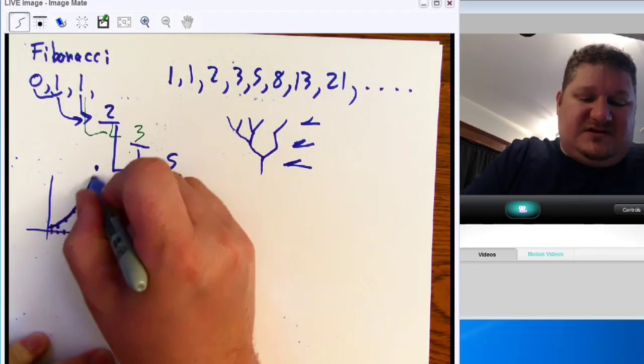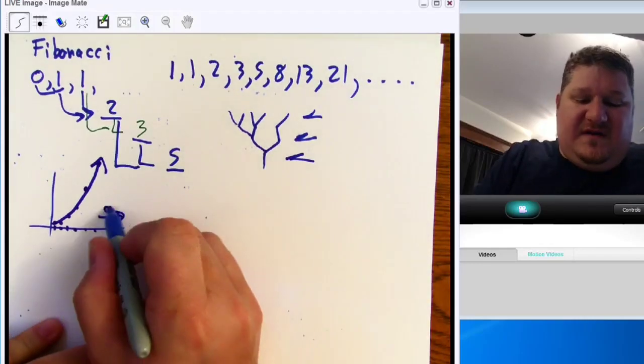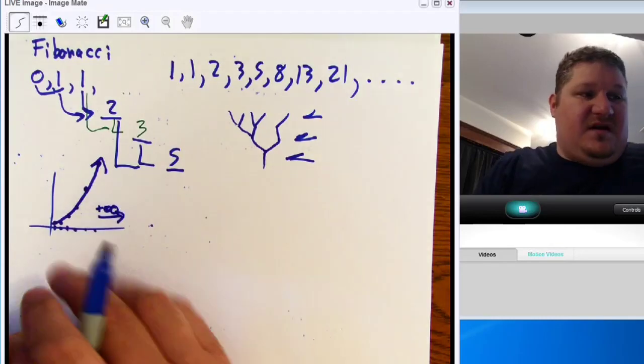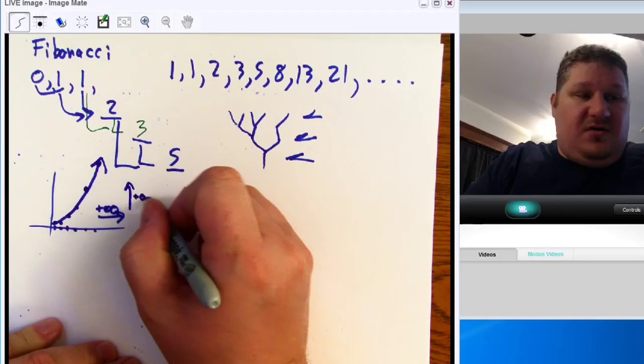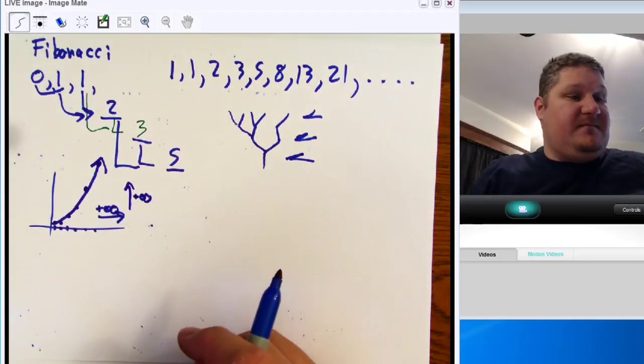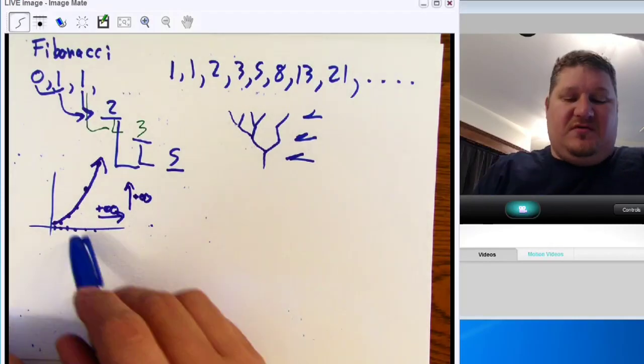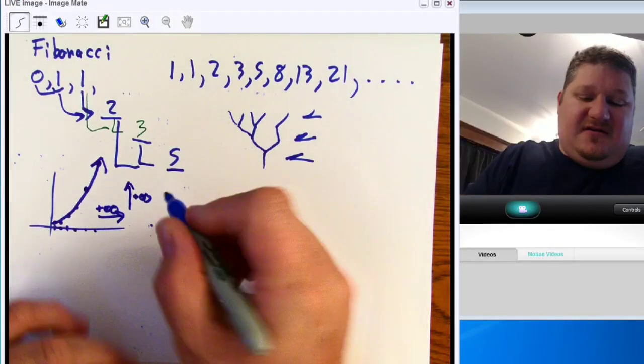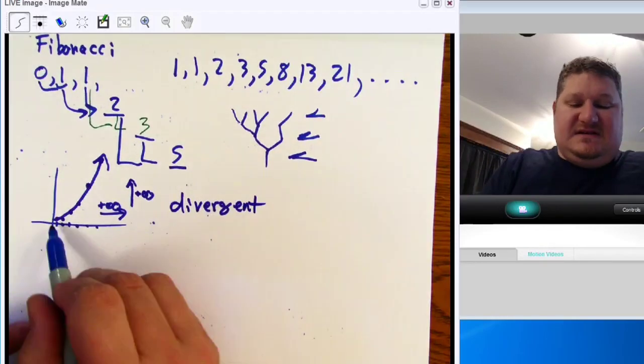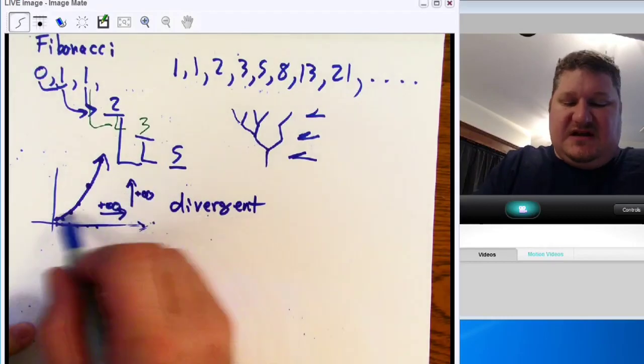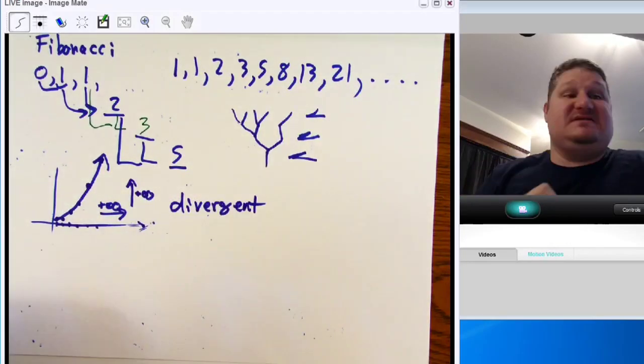You'll notice that we're getting some sort of shape like this. As we go to infinity for x, or the number of terms, the y, or the result, is also going to be going to infinity. So this idea here is divergent because it does not go along with the expectation. It does not come in toward the axis. It flies away from the axis. It becomes divergent.